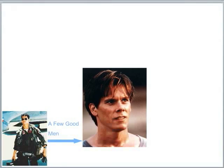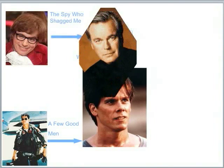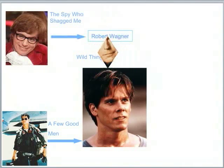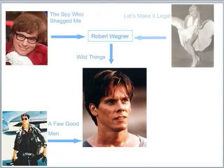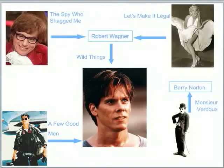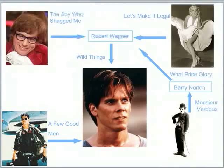Mike Myers has not co-starred with Kevin Bacon, but he has co-starred with somebody who has — Robert Wagner — so he's got a Bacon number of two. Marilyn Monroe was dead before Kevin Bacon started making films, but she still has a Bacon number of two because she co-starred with Robert Wagner. And Charlie Chaplin co-starred with Barry Norton, who also co-starred with Robert Wagner, giving Charlie Chaplin a Bacon number of three — only three steps to get to Kevin Bacon.